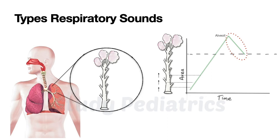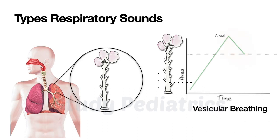Sounds produced in bronchioles are called bronchial sounds, and sounds produced in alveoli are called vesicular sounds. Since expiratory sounds are given more importance, we name breath sound types based on the expiratory component in the graph. In this graph, only the alveolar part is involved in expiration, so the breath sound is named vesicular — heard in normal lungs.